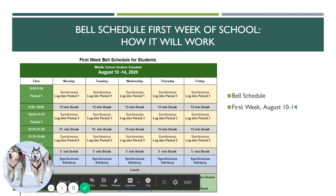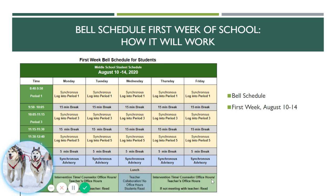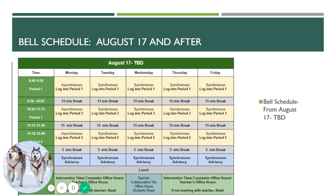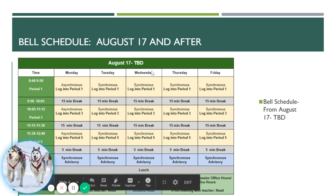Then there's a short five-minute break and you'll go to advisory. Advisory is a time for you to connect with your classmates and learn more about your middle school. After advisory it will be time for lunch — a half-hour lunch. The afternoon time is specifically for getting individual help from your teachers, or making an appointment with your teachers to talk about your progress. If you're doing well or don't need extra help, the afternoons will be time to read and work on math.